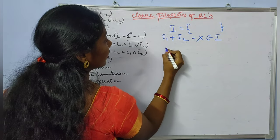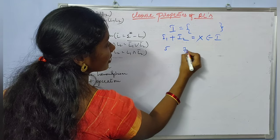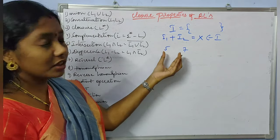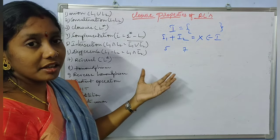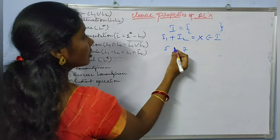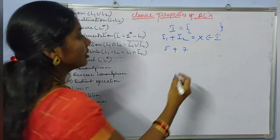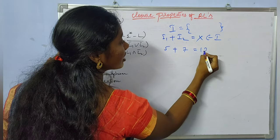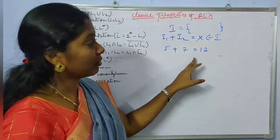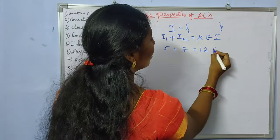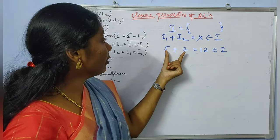For example, consider one integer is 5 and another integer is 7. I will take these two integers and apply the addition operation. The result is 12. We know that 12 is also an integer, so 12 belongs to that set. Therefore, the set of all integers is closed under the plus operator.